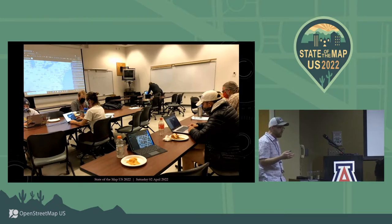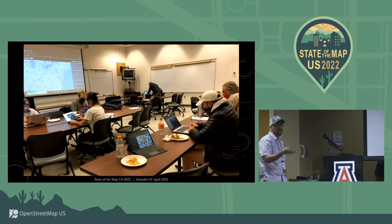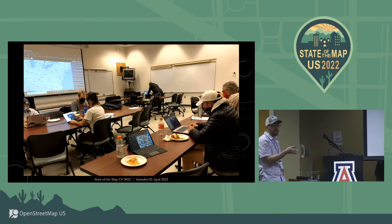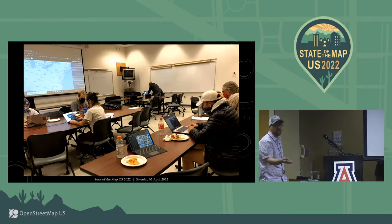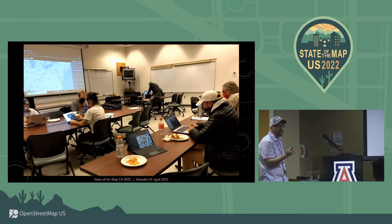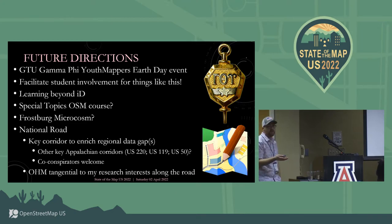In terms of where we are now, I'm the advisor for Gamma Theta Upsilon — the International Geographical Honor Society — in my department, and I housed a new Youth Mapter chapter within our GTU society, just because it was easier since we already had a constitution. During GIS Day last semester during Geography Awareness Week, we had a map-a-thon and introduced some new mappers to OpenStreetMap. We had pizza, it was a bit of a muted affair with masks and distancing, but the reception was positive and there's talk of doing another event in April for Earth Day.